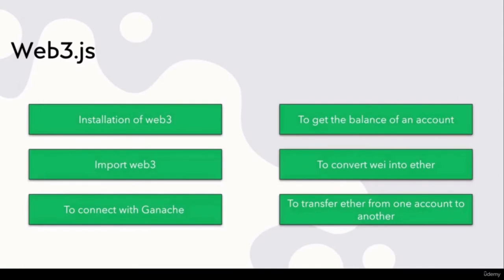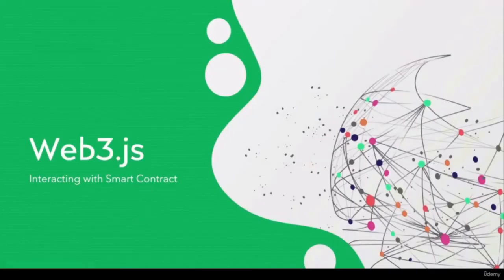This was the beginning where we have seen how web3.js interacts with the blockchain. Now we are going to see how we are going to interact with our smart contract using web3.js. Let us get started. Let us first see what we are going to learn in this part of the video. The first thing we are going to learn is how to interact with Ganache where our smart contract will be deployed.